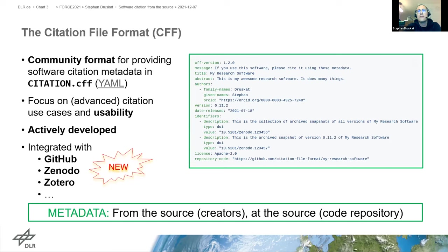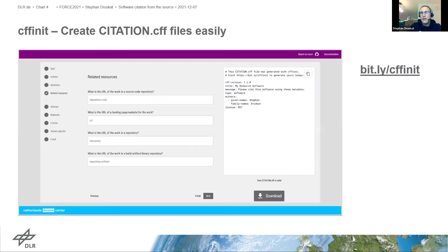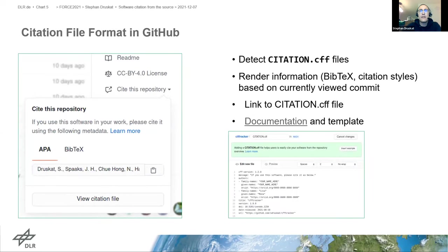In the last year it's seen new integrations with a number of platforms. First, the Netherlands eScience Center developed a website called cff-init which makes it easy for users who don't want to write those files manually — they just fill out a form and download the file to put in their repository. That's where these files are meant to live, so that people who come to a GitHub repository for the software can easily find the citation information.